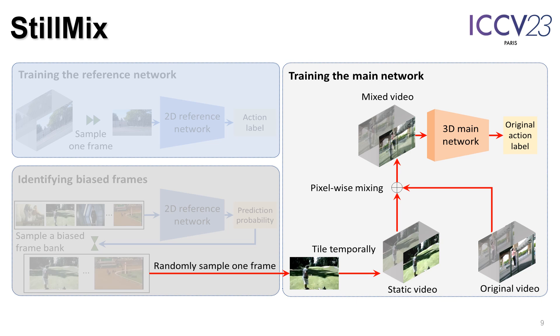Since the labels of the mixed video and the original video are the same, the 3D main network is discouraged from learning correlations between action classes and biased frames — including both backgrounds and foregrounds — enabling mitigation of both types of static bias.